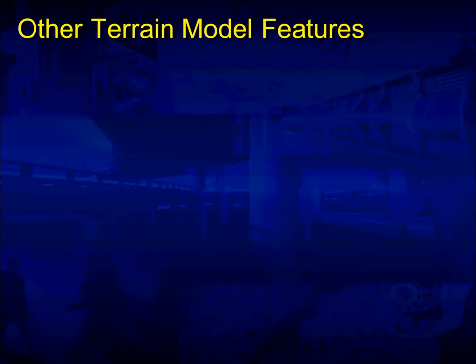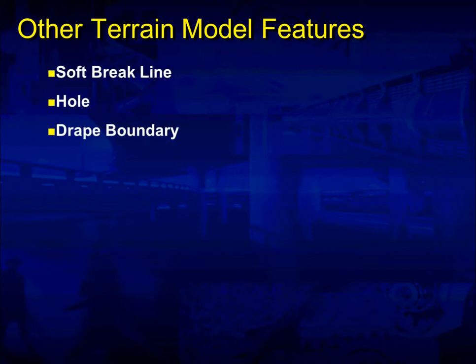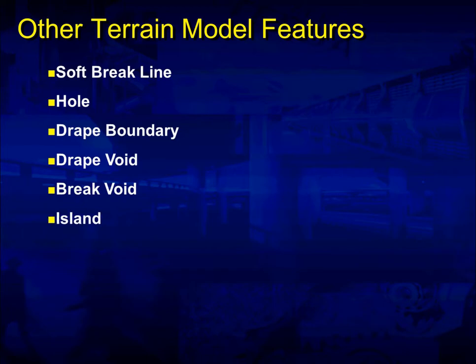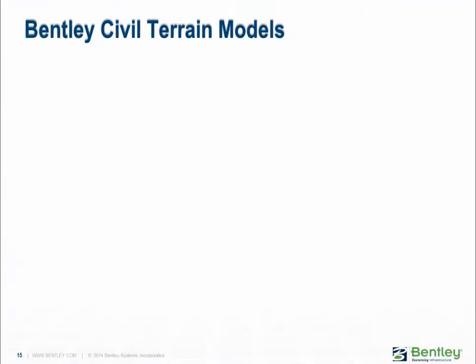Other terrain model features that we're not going to discuss in detail in this chapter, but I wanted to make you aware of them: soft brake line, poles, drape boundary, drape voids, brake voids, and island.